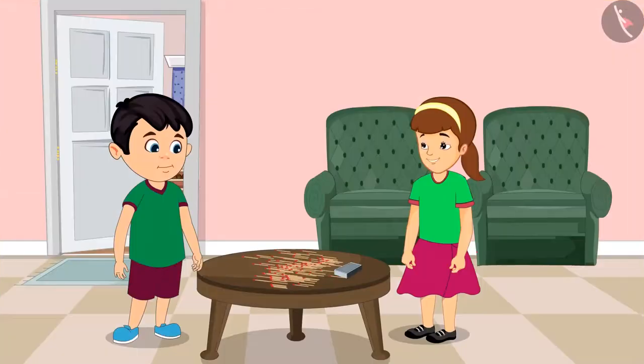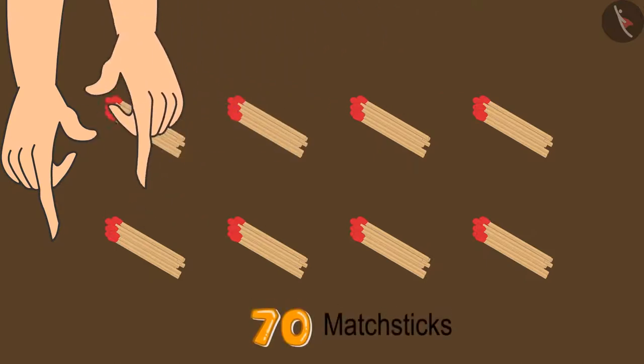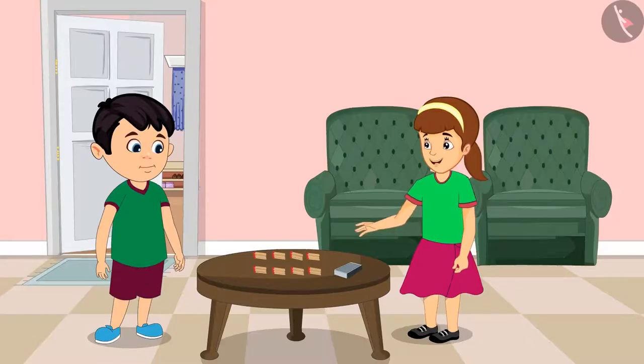Oh Chotu, these are too many matchsticks. Let us take 70 out of this pile. Please make bundles of 10 each of these so that counting becomes easier. All right, I will count. So these are now 70 matchsticks. Oh Chotu, how many bundles have you made?